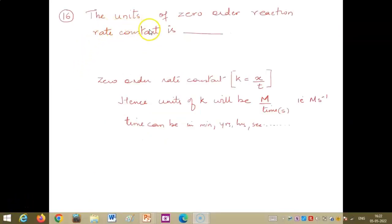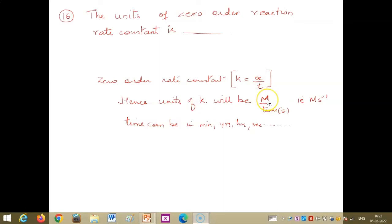The units of the zero order reaction rate constant: for zero order, k = x/t, where x is concentration in moles per liter and t is time in seconds (or minutes, hours, years). Therefore, the unit of k for a zero order reaction is mol·L⁻¹·s⁻¹ (moles per liter per second).